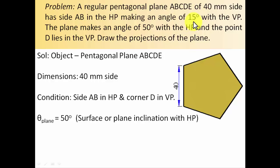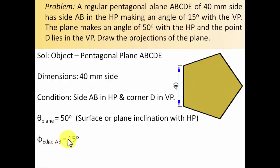Secondly, we have this 15 degrees. The side AB which is in the HP will always be in contact with the horizontal plane. Apart from that, it is also inclined at an angle of 15 degrees with the vertical plane. So phi AB equals 15 degrees. This is all the data I have extracted from the problem.